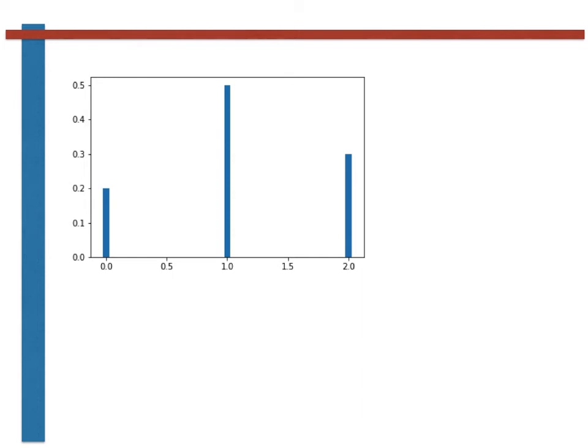Any discrete random variable has a probability mass function like the one shown here. The heights of the bars in the graph represent the probabilities of getting the outcomes shown on the x-axis. Consequently, if we add the heights of all the bars in the probability mass function together, we get one.